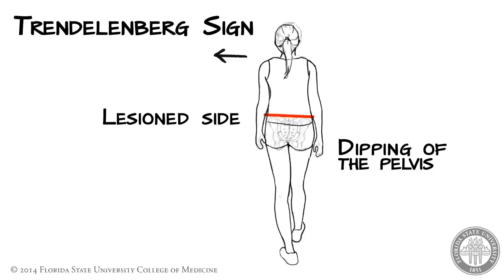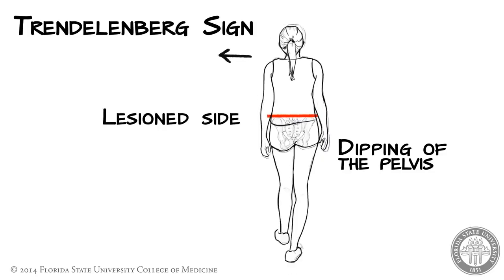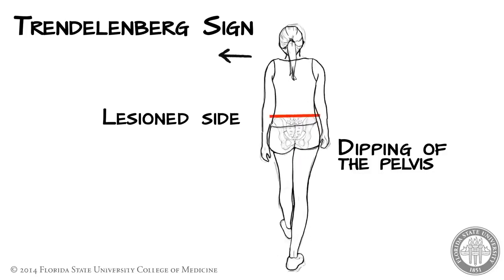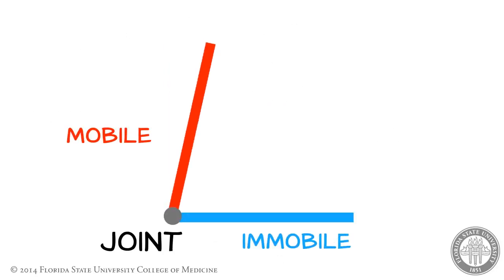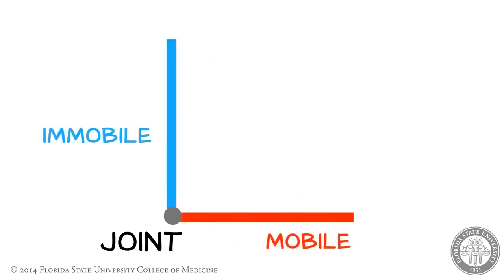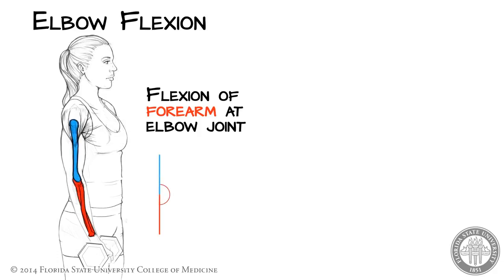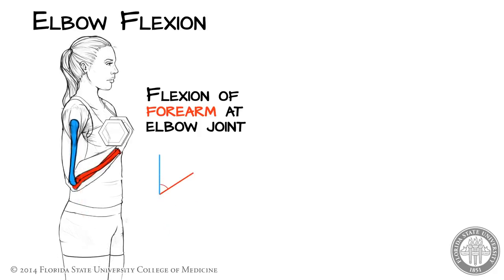The mechanics behind the Trendelenburg sign are difficult, but can be made easier by first reviewing basic principles of joint movements. Joint movements can be described in different ways, depending upon which skeletal elements are fixed or immobile. For instance, performing a dumbbell curl is an example of elbow flexion. More specifically, this motion can be described as flexion of the forearm at the elbow joint. The bones of the forearm are in motion, while the humerus is relatively immobile, held in place by the muscles of the shoulder and chest.